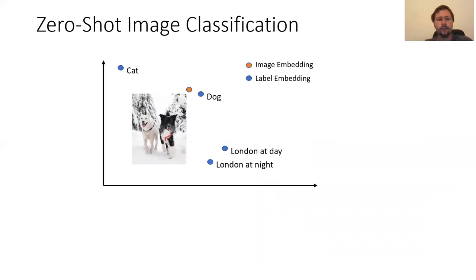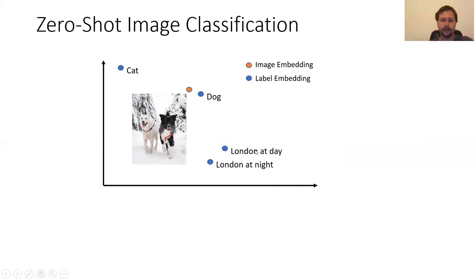You can also use it for zero-shot image classification. You define your labels as text strings — for example, cat, dog, London at day, and London at night. You encode the text in the vector space, and then when a new image arrives, you check what is the closest text, and that becomes the label for the image.